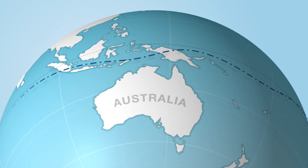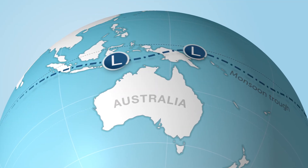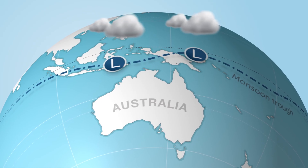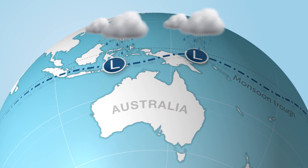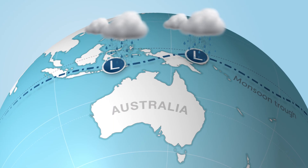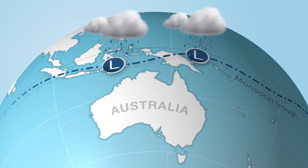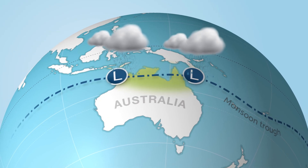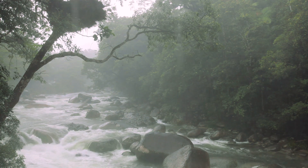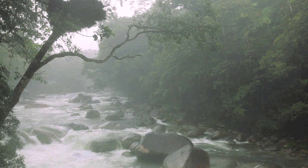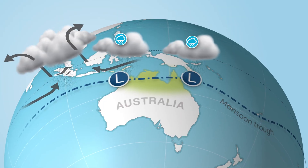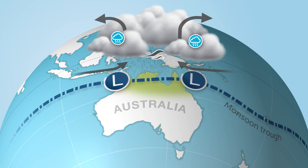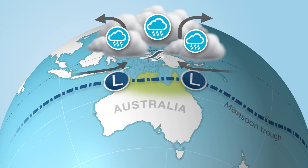Late in every year, a belt of low pressure known as the monsoon trough forms in the tropics and becomes the focus for enhanced cloud and rainfall for the season. The monsoon is at its most active when this trough is close to or over Northern Australia, and typically brings widespread rainfall to tropical areas. When the MJO is in the Australian region, it can strengthen the monsoon trough and bring even more rainfall.